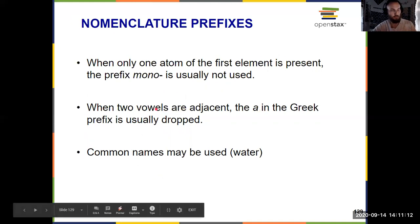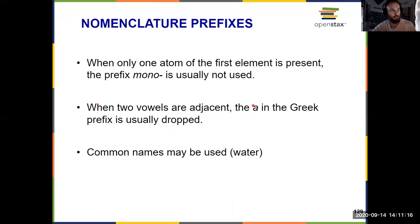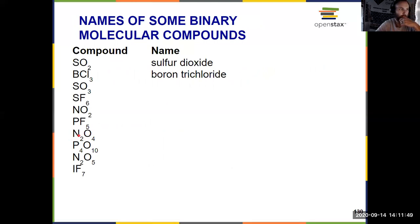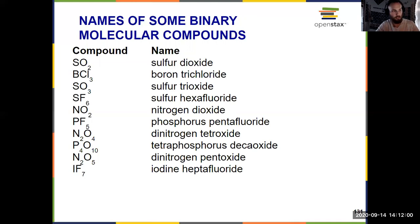If you have two adjacent vowels, we usually end up dropping the A. And of course, there are always situations where we use common names more often — you don't typically hear somebody saying dihydrogen monoxide; you just say water. Here are examples: SO2 is sulfur dioxide, BCl3 is boron trichloride, N2O4 is dinitrogen tetroxide. Pause the video, try the others for practice, and make sure you know those prefixes for your exam.